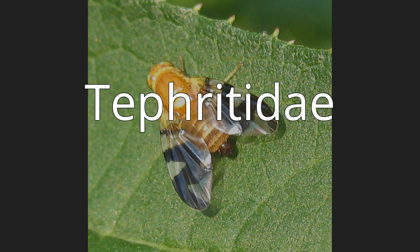The Tephritidae are one of two fly families referred to as fruit flies, the other family being the Drosophilidae. The family Tephritidae does not include the biological model organisms of the genus Drosophila in the family Drosophilidae, which is often called the common fruit fly.